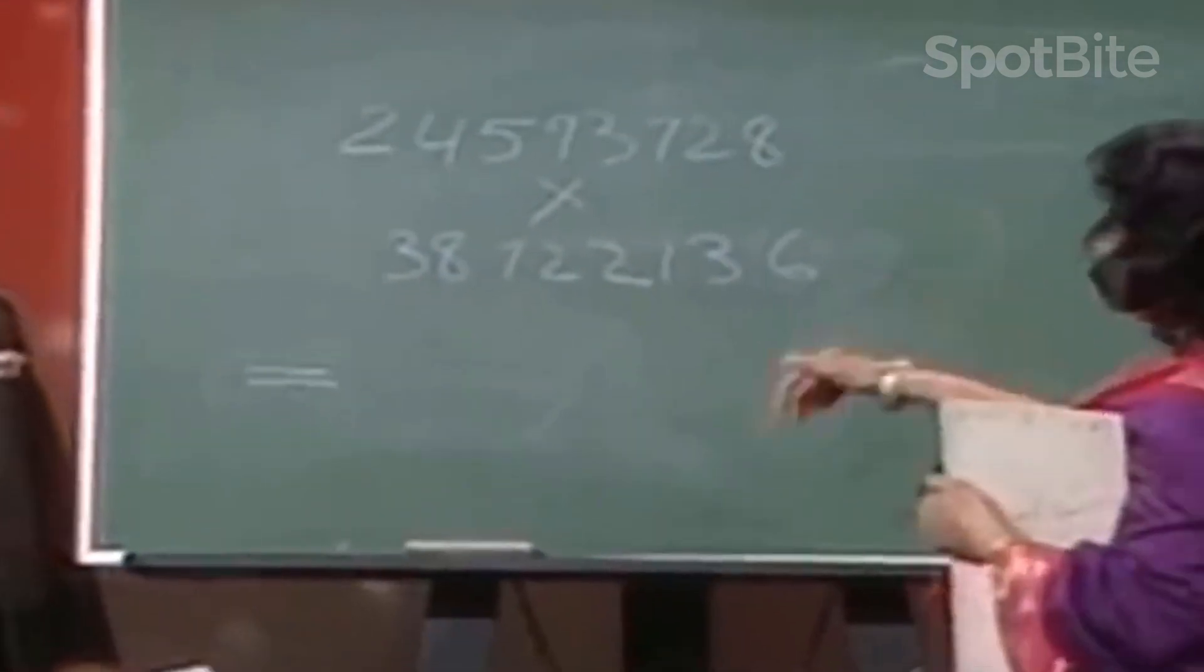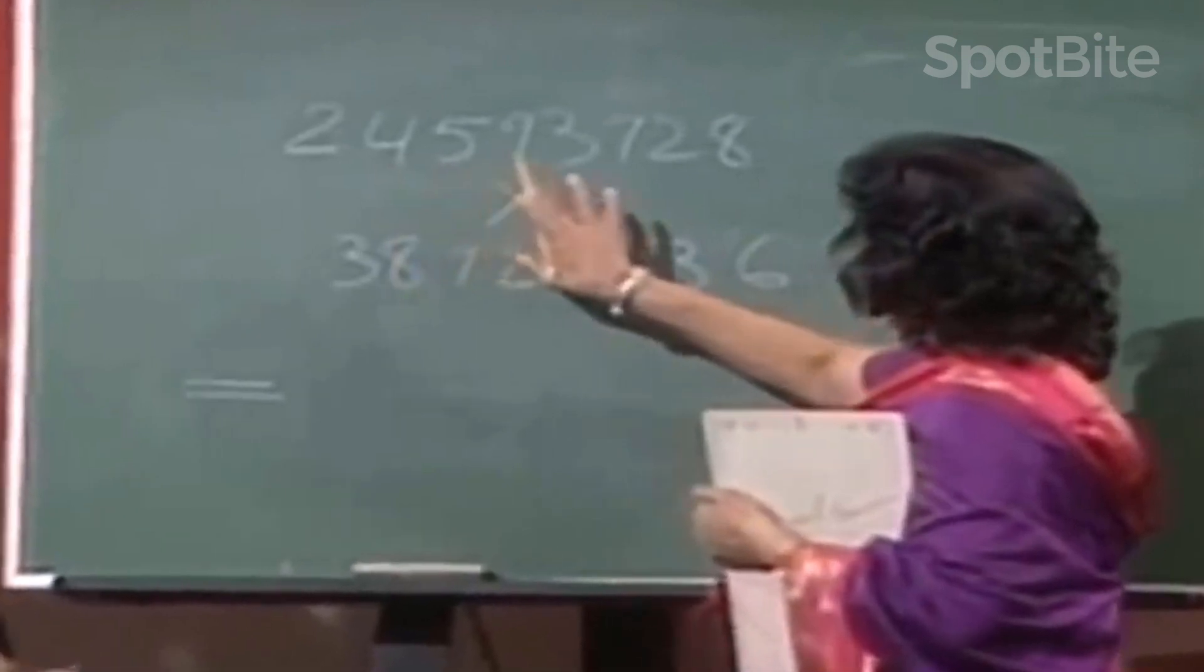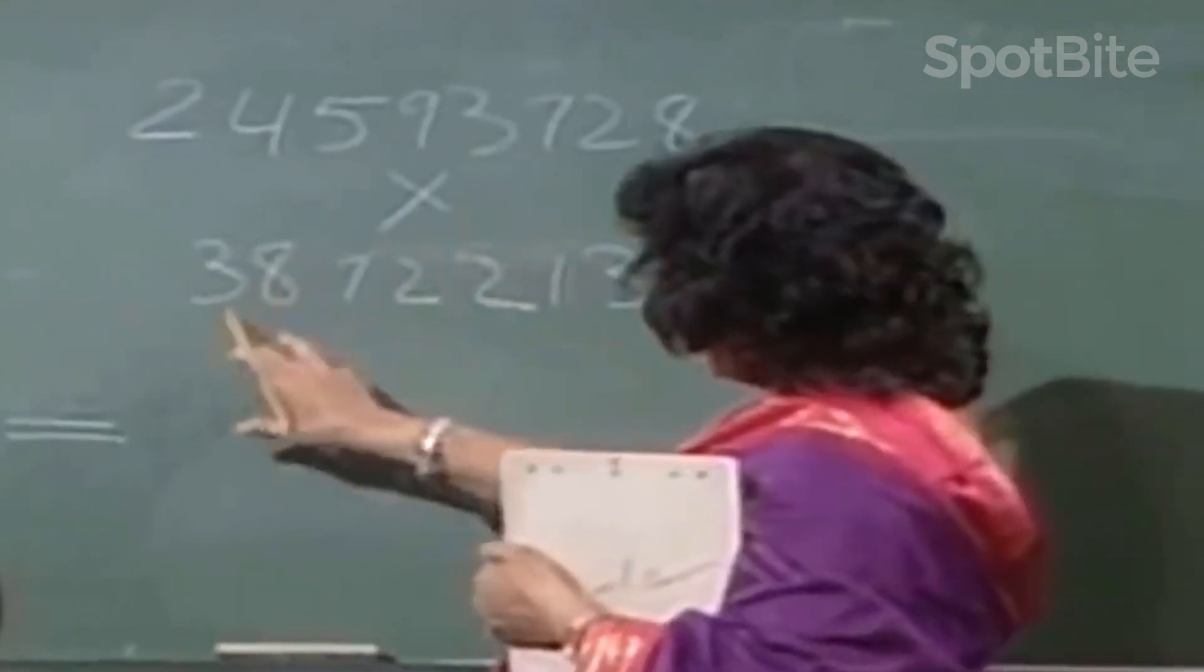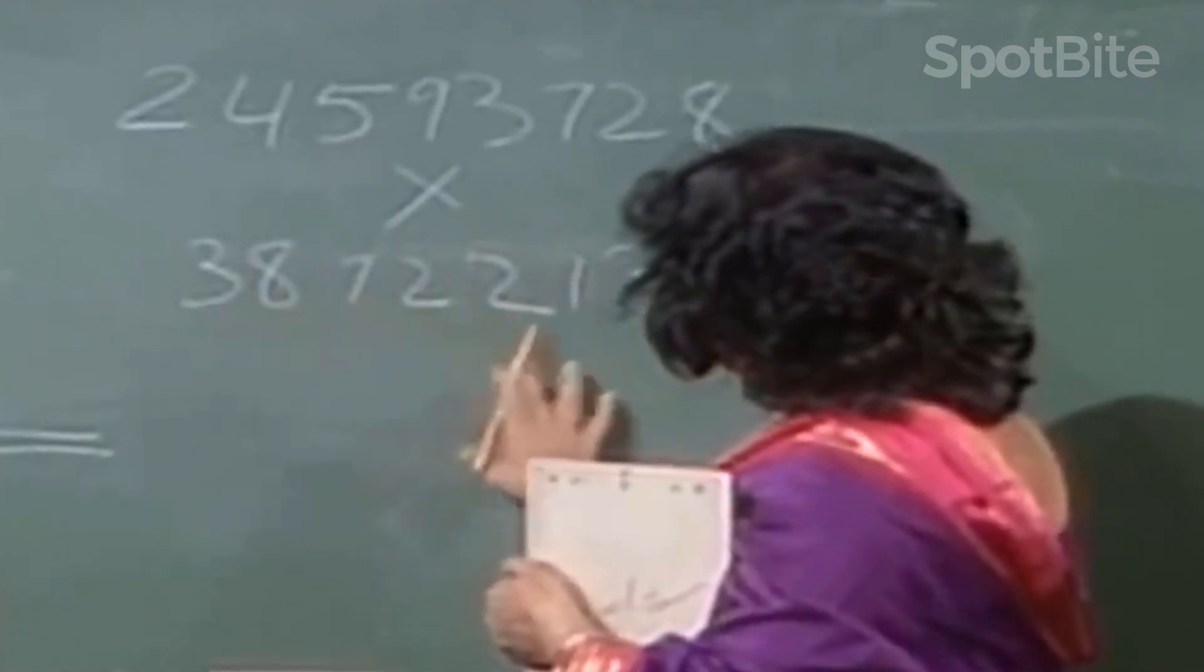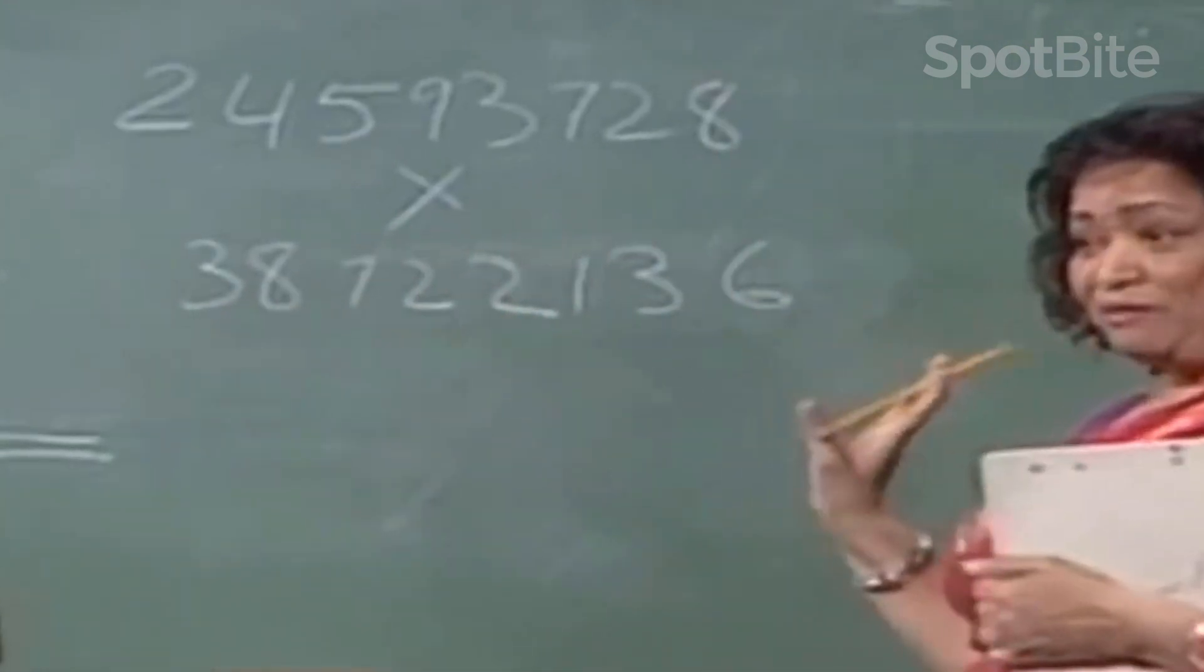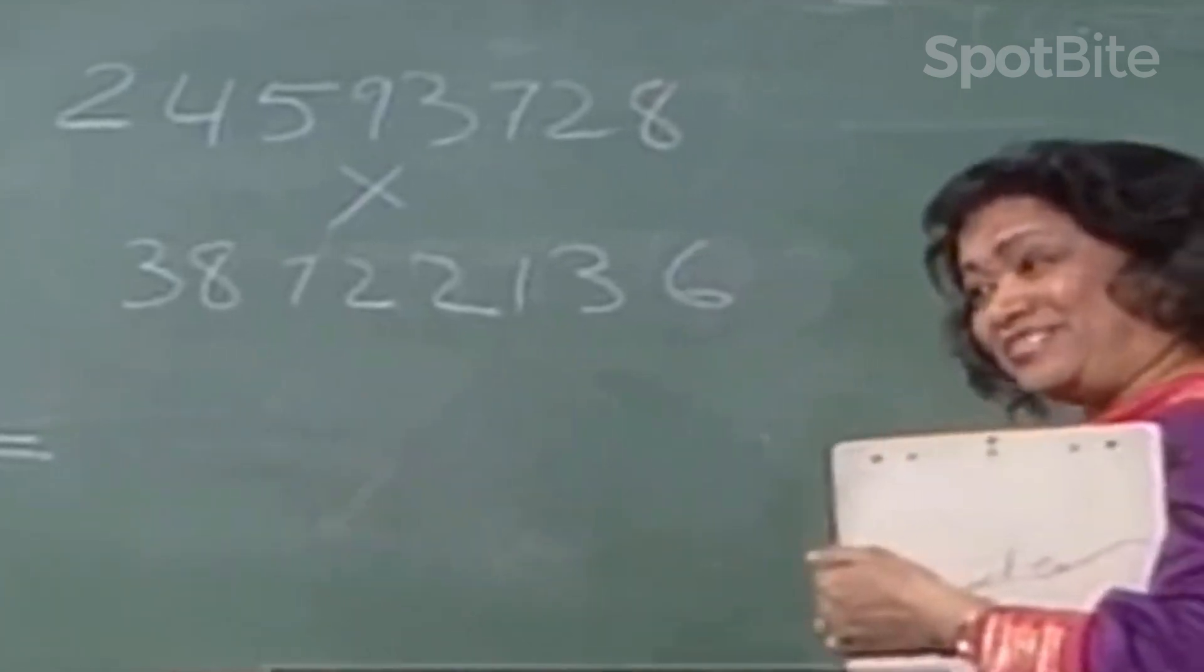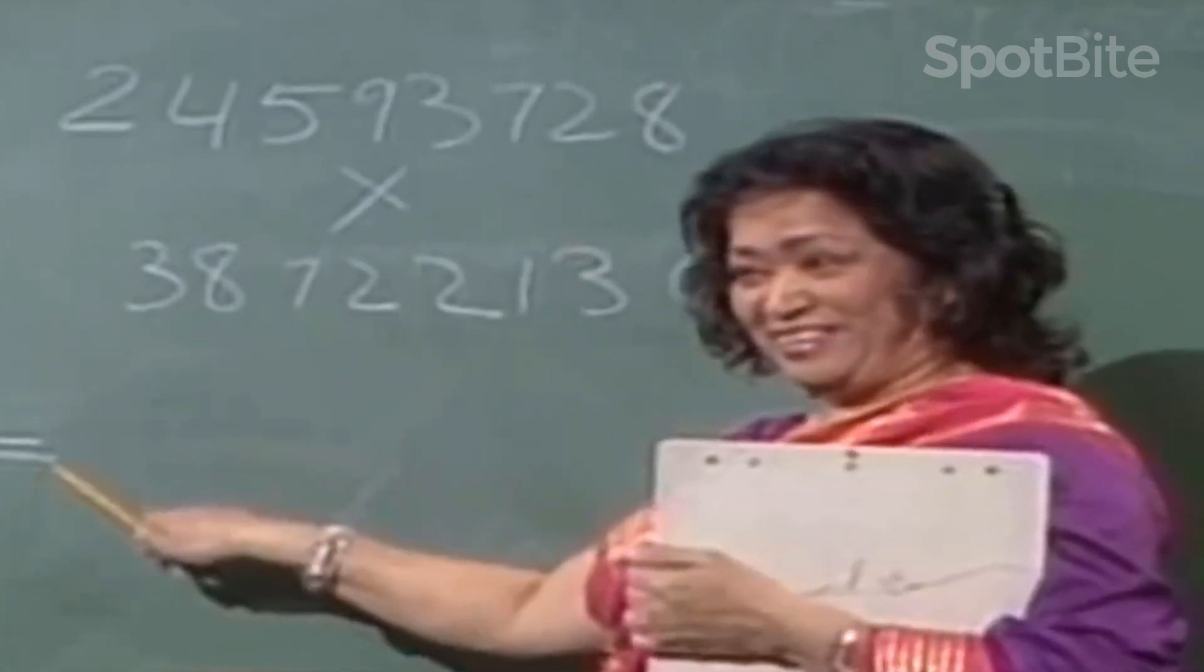Ok, now the question is 2, 4, 5, 9, 3, 7, 2, 8, multiplied by 3, 8, 7, 2, 2, 1, 3, 6. Now tell me Ayas, you want me to give you the answer from this side to this side or this side to this side? Oh my god, I don't think I want the answer. What a choice. Ok, go backwards.